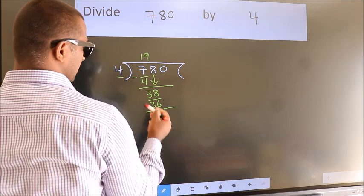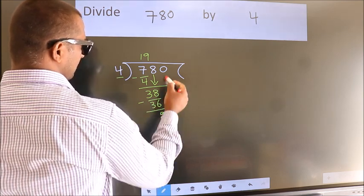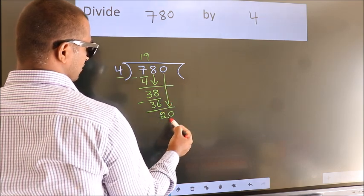Now we subtract. We get 2. After this, bring down the next number. So, 0 down. So, 20.